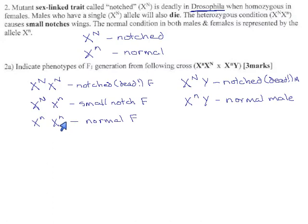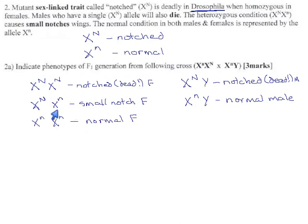So like with hemophilia, where we saw that a female could have one copy of the defective allele and be okay because she had a normal version to cover for it — here again we see that the notched condition, which would normally be lethal, isn't lethal in a heterozygous female, because she has a good copy that protects her. Males don't have that. If they get one copy of the defective allele, they get hit. Their only chance is to get the normal allele, because they don't have a backup.